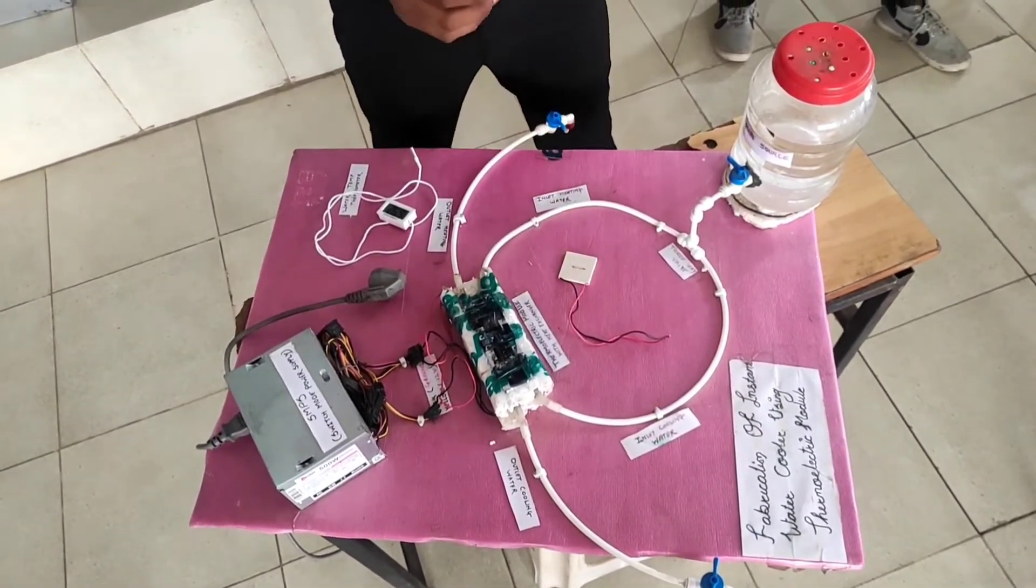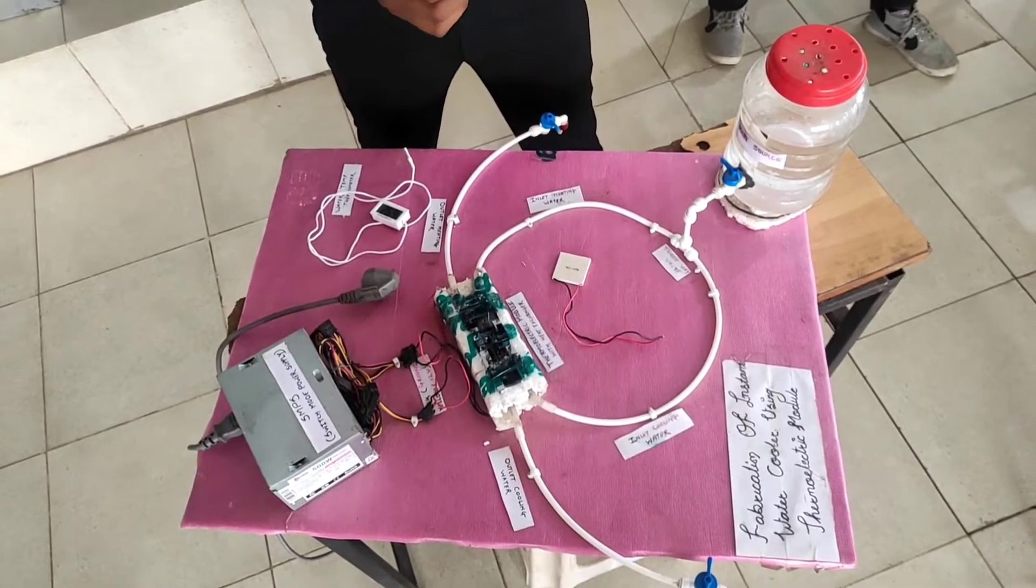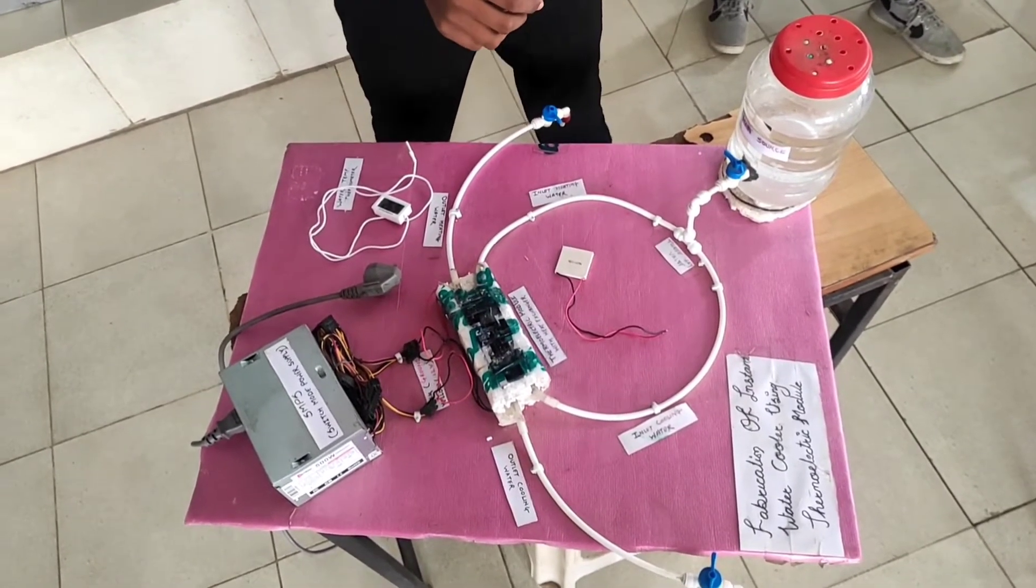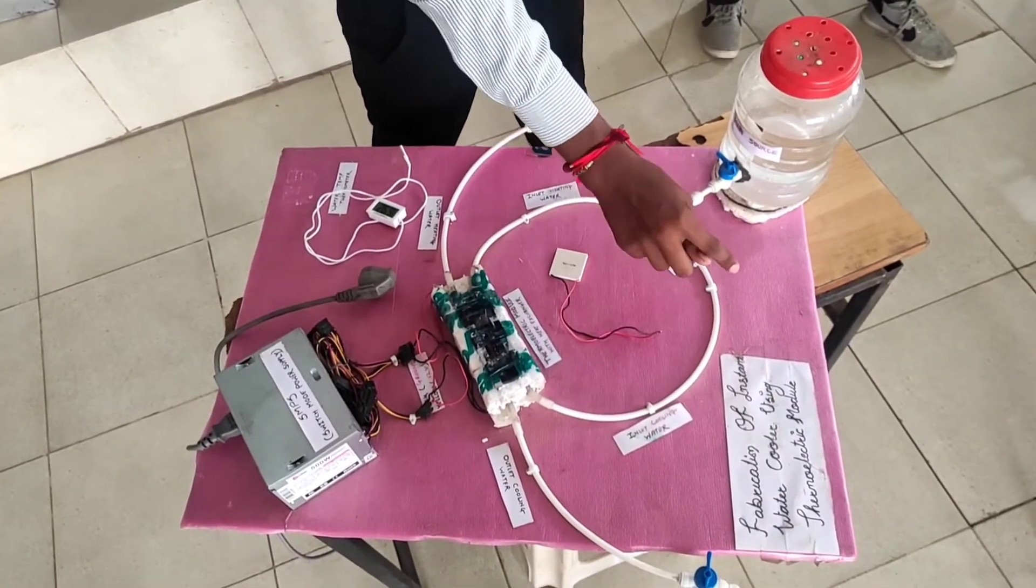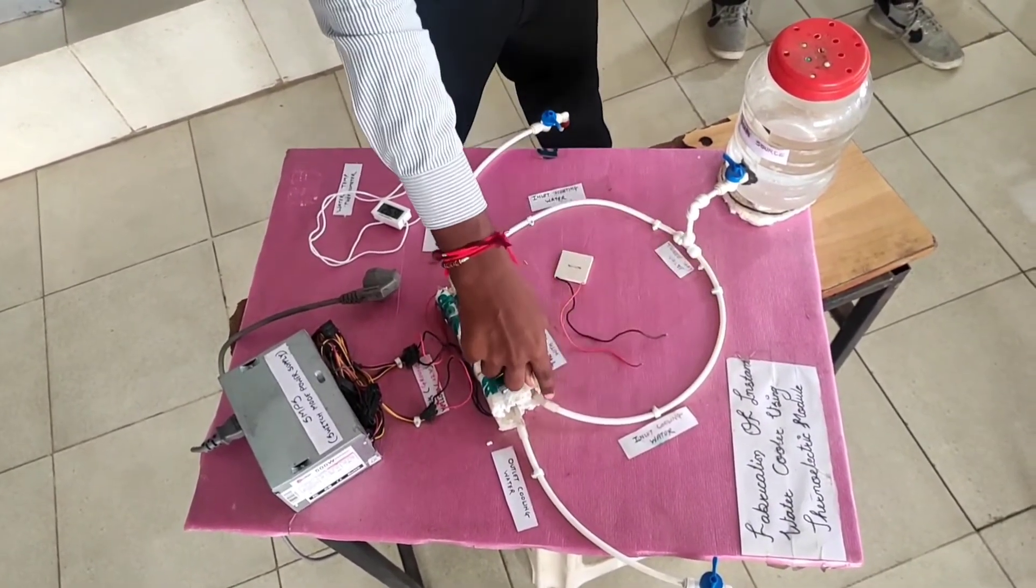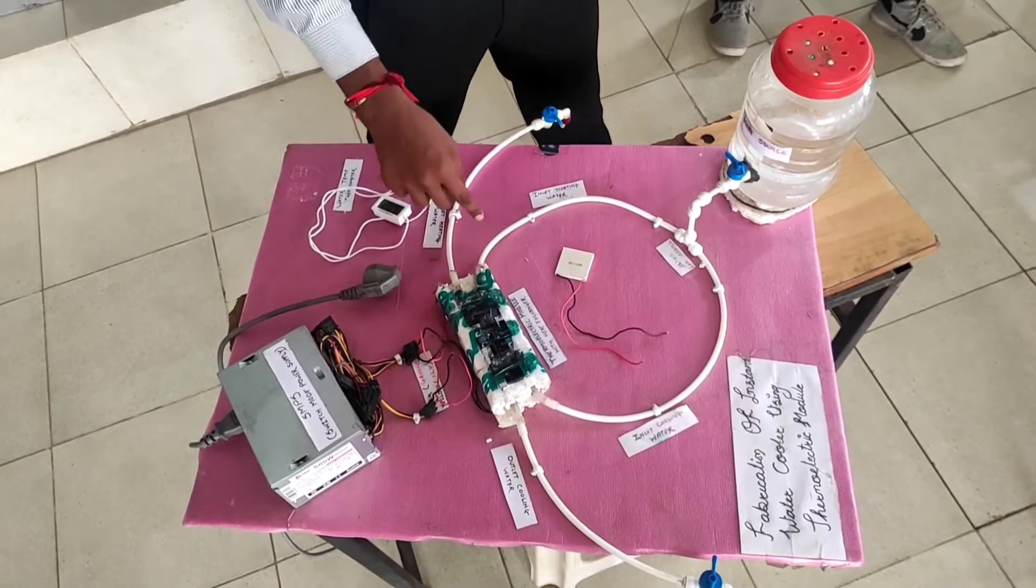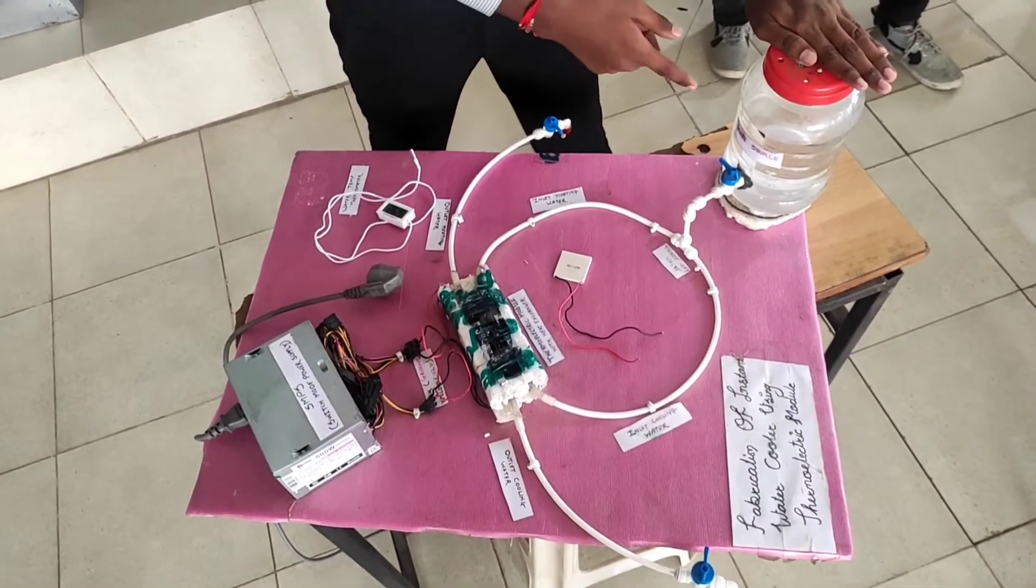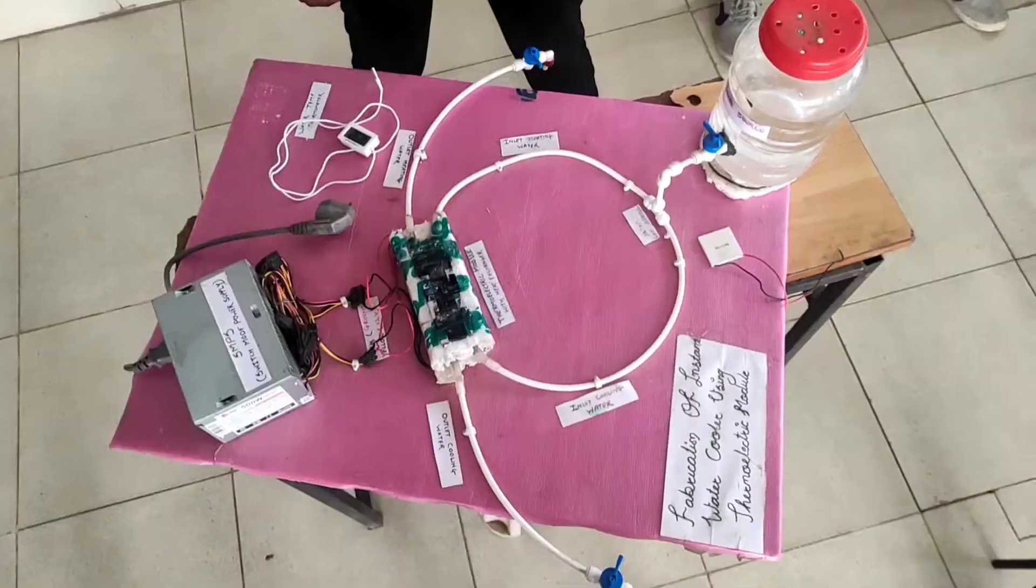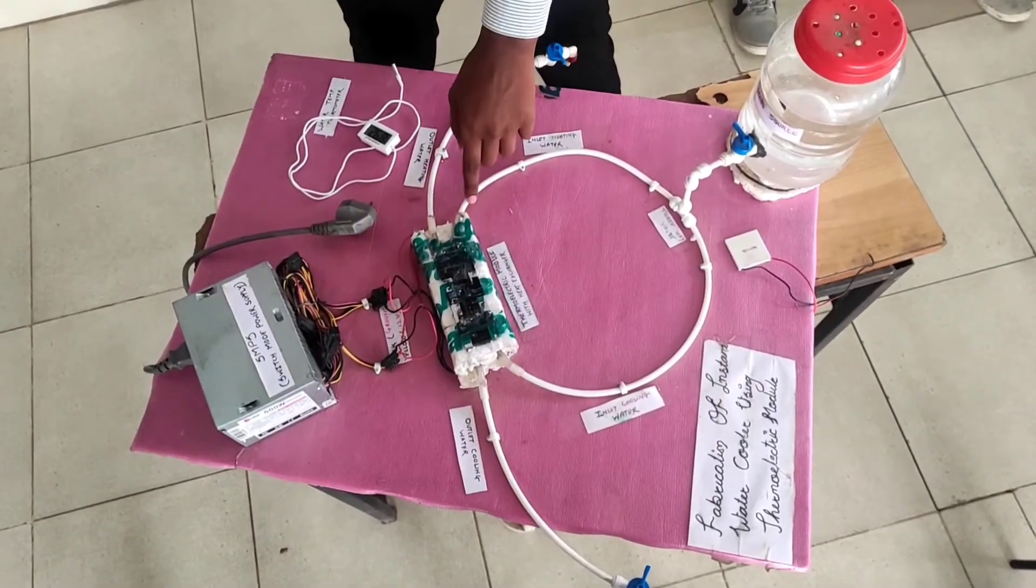So one will collect hot water and second will collect cold water. This is the route of water. This will go for hot water, this will go for cold water. This is the main source of our water. This is Teflon pipe.